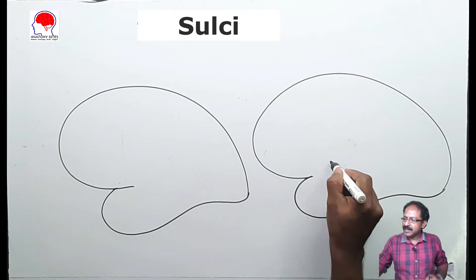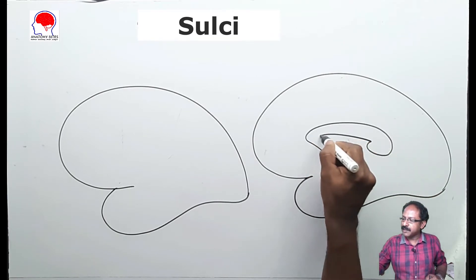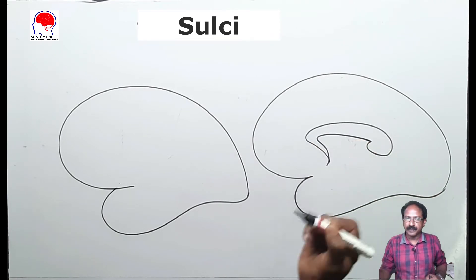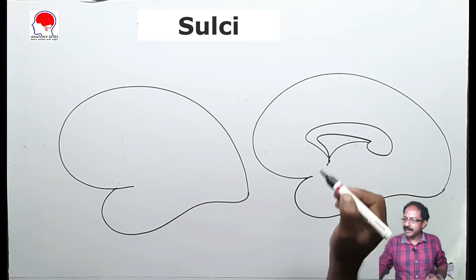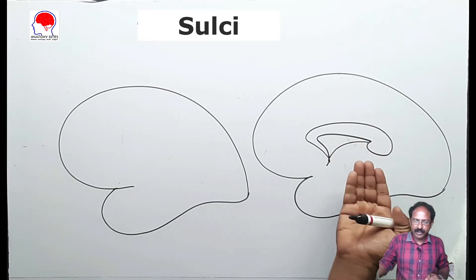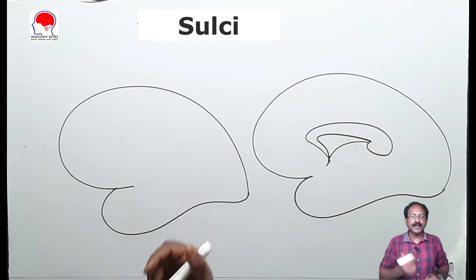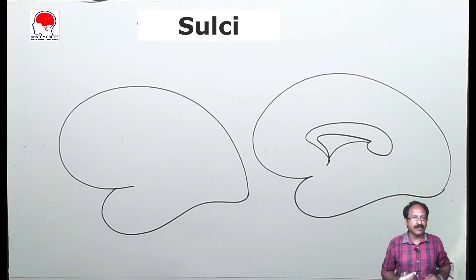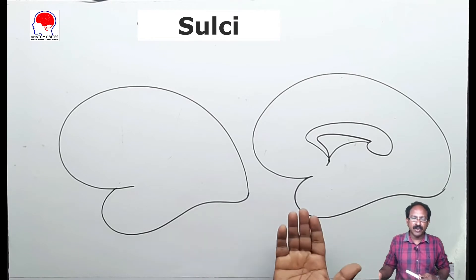To understand this is the medial surface, I am drawing the corpus callosum. Here is the fornix. So this is the medial surface and this is the superlateral surface of the cerebral hemisphere.